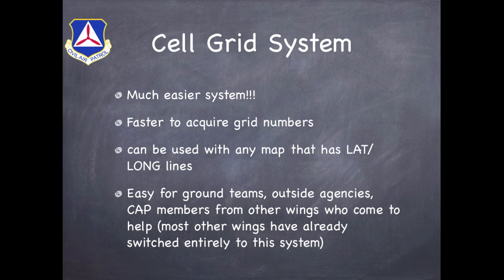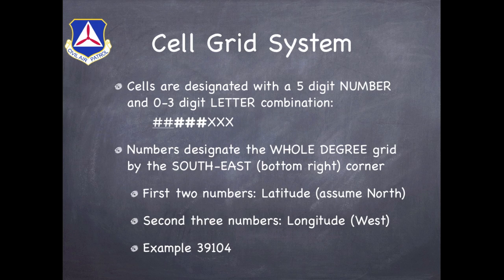Quite a few of the other wings have actually already switched over to this new system. So how does the cell grid system work? Well, it's based off of a five-digit number and letter combination using none up to three letters. The numbers designate the whole degree grid — basically 60 minutes by 60 minutes — and it's based on the southeast, or bottom right, corner. The first two numbers indicate the latitude, and in North America we're going to assume that's a north number. The second three numbers indicate the longitude, which we're going to assume is west. For example, the Denver area basically falls into 39104.